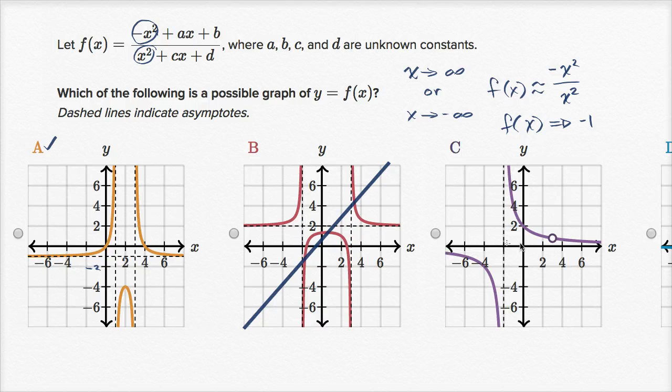Here, our horizontal asymptote is at y equals zero. The graph approaches the x-axis from either above or below. The horizontal asymptote is not y equals negative one, so we can rule that one out.